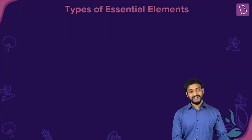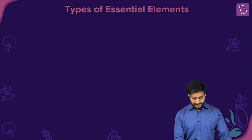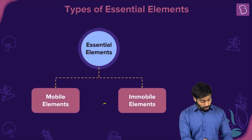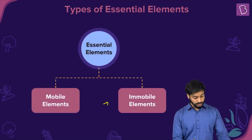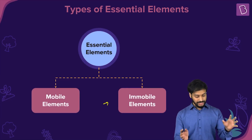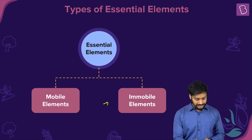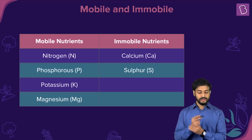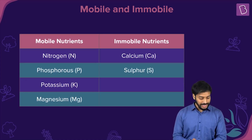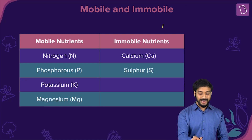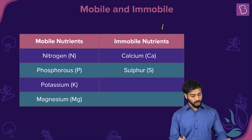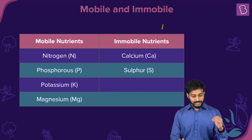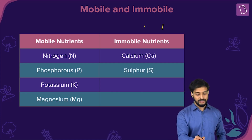Essential elements can be classified into mobile elements and immobile elements. The mobile nutrients are nitrogen, phosphorus, potassium, and magnesium — NPK and Mg. The immobile elements are calcium and sulfur.